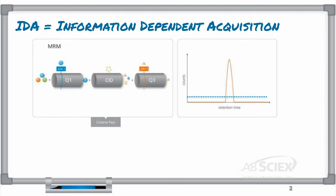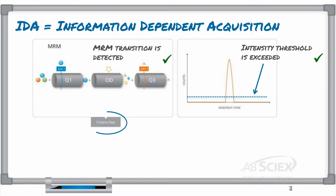The basic idea behind IDA is that you set an intensity threshold in your method, and when an MRM is detected and exceeds that intensity threshold, an EPI scan is triggered. Basically, this just means that the EPI scan acquisition is dependent on the detected MRM information.